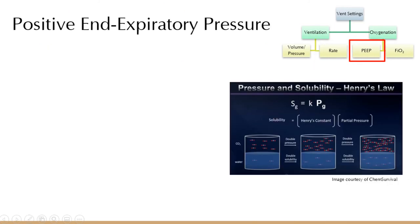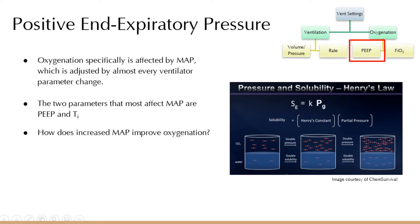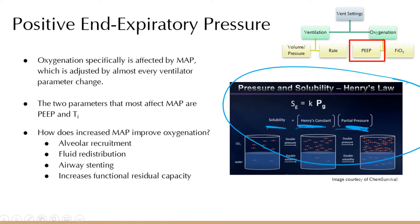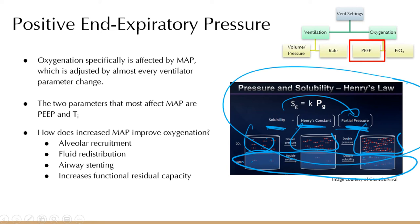How does mean airway pressure improve oxygenation? We've heard things like alveolar recruitment and increased surface area for gas exchange. That didn't fully connect for me until I came across Henry's Law: the solubility of a gas in a liquid is directly proportional to the partial pressure of that gas above the liquid. If you consider the alveoli as the gas space and the pulmonary vasculature as the liquid, the more you increase intrathoracic pressure, the better you oxygenate.